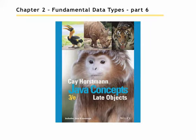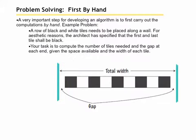Chapter 2, Fundamental Data Types, Part 6. So it's important to be able to solve the problem by hand, because as we've said previously, you can't write a computer program to solve a problem if you don't first know how to solve the problem, if you don't have the algorithm to solve the problem.